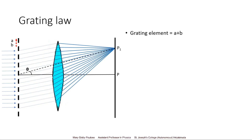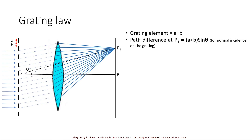The distance a plus b is called the grating element — the distance of an opacity added to the distance of a transparency. To get a condition at point P1, we calculate the path difference. Path difference at P1 is (a + b)sinθ for normal incidence on the grating, as we have seen during the N-slit diffraction discussion. If P1 is a point of principal maxima, the path difference should equal an integral multiple of lambda: (a + b)sinθ = nλ.